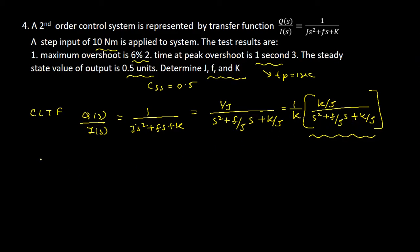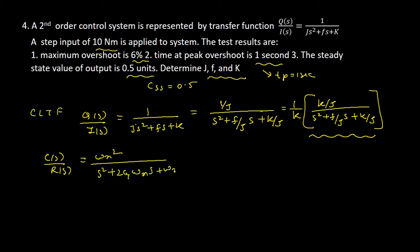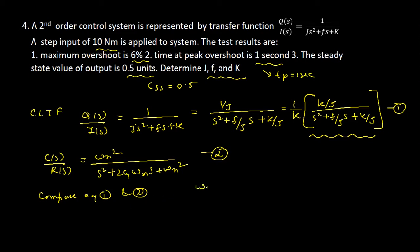The bracket equation is now in the form of the standard closed loop transfer function of a second order control system: C(s)/R(s) = ωn² / (s² + 2ζωn·s + ωn²). We take this as equation number one and the derived expression as equation number two, and now compare them.